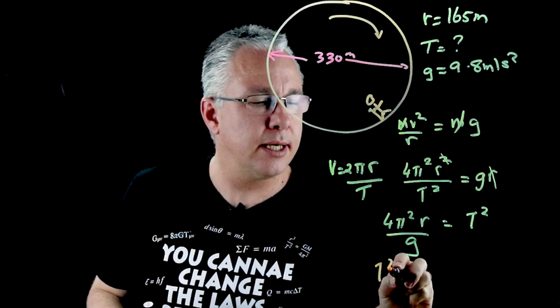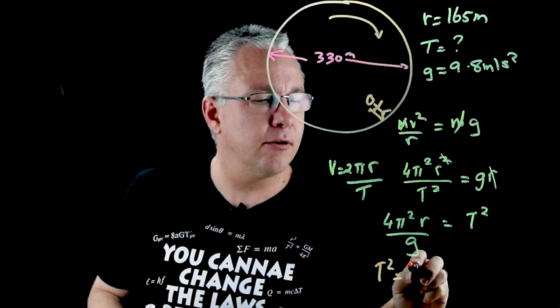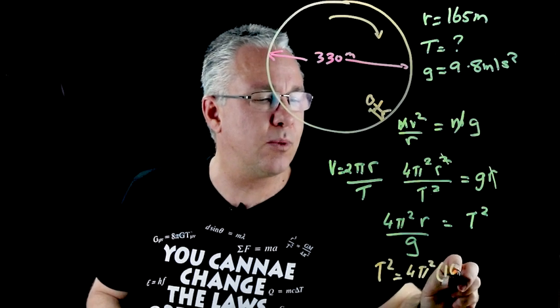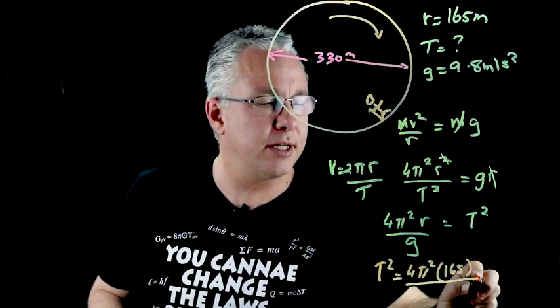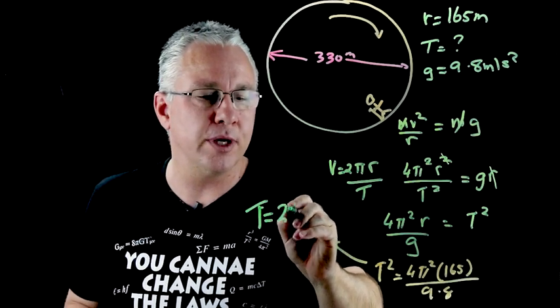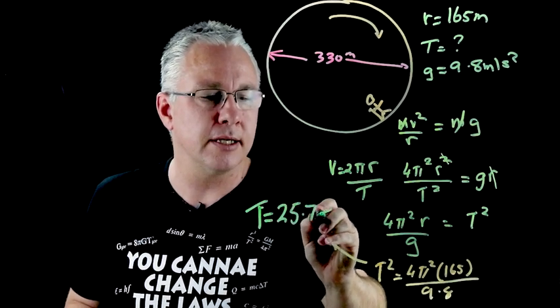So T² ends up equaling 4π² I'll just leave it as is multiplied by r which is our 165 and we divide this of course by 9.8. If you work out T you're going to get a T value of 25.7 seconds.